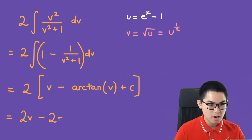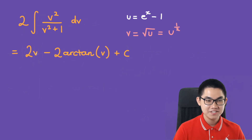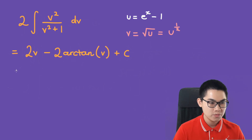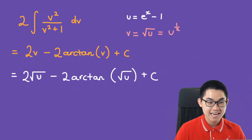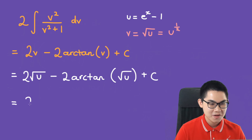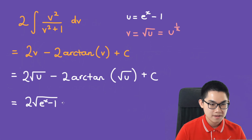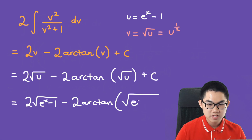Since v is the square root of u, we substitute back: 2 times the square root of u minus 2 arctan of the square root of u plus c. And since u equals e to the power of x minus 1, the final answer is 2 times the square root of e to the power of x minus 1, minus 2 arctan of the square root of e to the power of x minus 1, plus c.